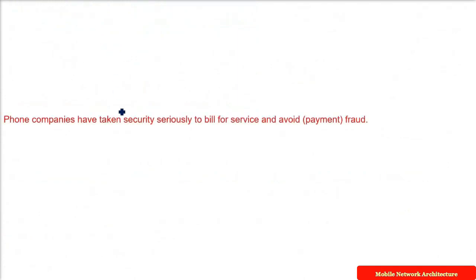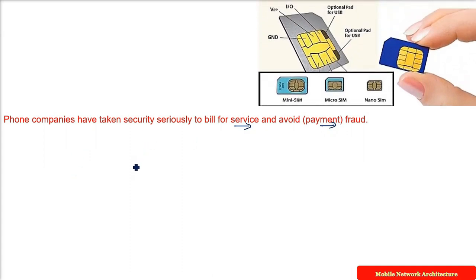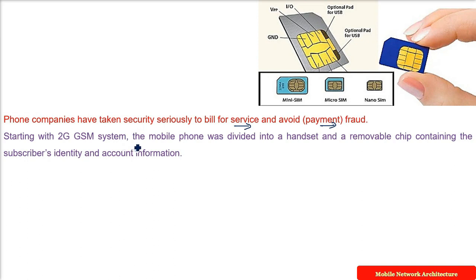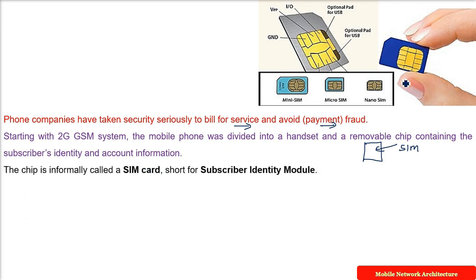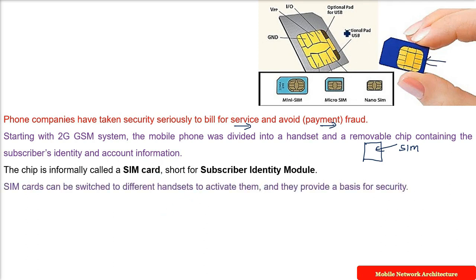Phone companies have to take security very seriously. You are paying them and any kind of payment fraud has to be taken care of. Starting with the 2G GSM system, the mobile system was divided into two parts: the handset, and the SIM card — a removable electronic chip containing the subscriber identity and account information. SIM stands for Subscriber Identity Module.